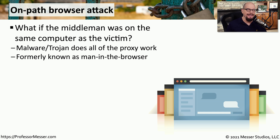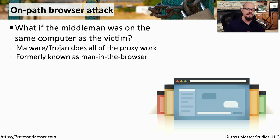An on-path attack is not easy to execute — with ARP poisoning, the attacker needs to be on the local network, which isn't always accessible. It would be much easier if the attacker were on the same computer as the victim. With an on-path browser attack, the malware acting as the relay exists on the same computer as the victim, effectively inside the victim's browser, running as an automated process rather than a person handling the relay.